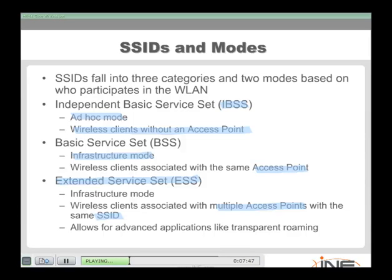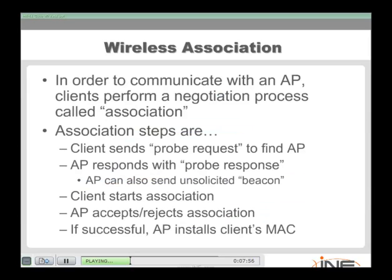In infrastructure mode, a device needs to associate with its access point. The client device sends a probe request out on the network to find the access point. The access point sends a probe response. The client initiates the association, and the access point either accepts or rejects it. If successful, the access point installs the MAC address of the client — somewhat like a DHCP process.